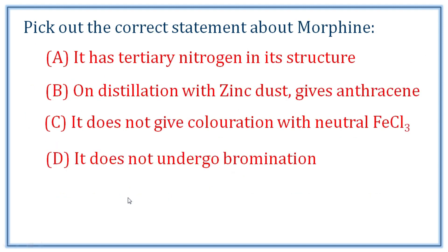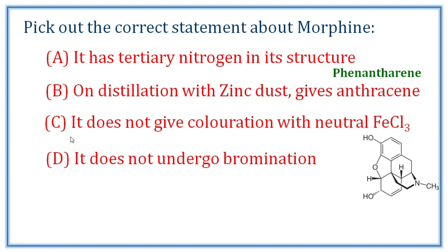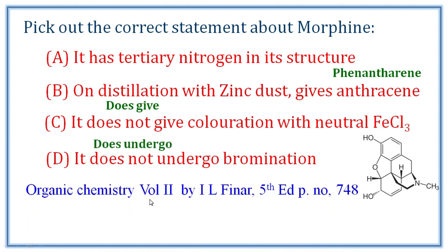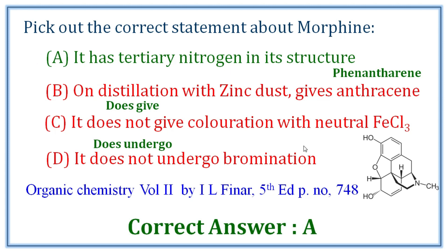Next question: pick out the correct statement about morphine. Option A: it has a tertiary nitrogen in its structure — correct statement. Option B: on distillation with zinc dust, it gives anthracene — incorrect, morphine has a phenanthrene backbone so it gives phenanthrene. Option C: it does not give coloration with neutral ferric chloride — incorrect, since morphine has a phenolic group it does give color. Morphine also undergoes bromination. Correct answer: A.